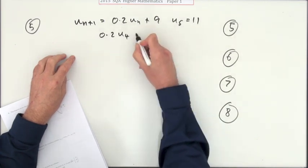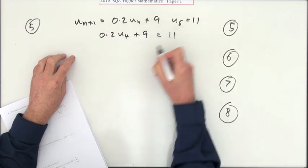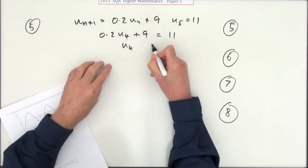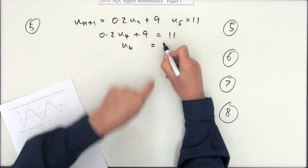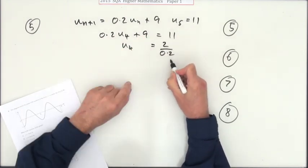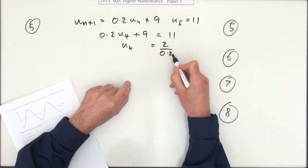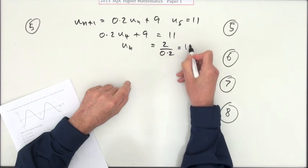0.2 of u4 plus 9 gave you that 11. So I'll have to rearrange that, undo it, take away 9, makes that 2, divide by 0.2. Do 10 times the top, 10 times the bottom, 20 over 2 is 10.